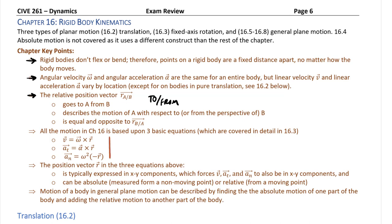These three equations — cross products of omega crossing into R equal to linear velocity, a cross product of angular acceleration alpha crossed with R gives tangential acceleration, and omega squared in the negative R direction gives normal acceleration — are the fundamental basis of almost all computations in this entire chapter.